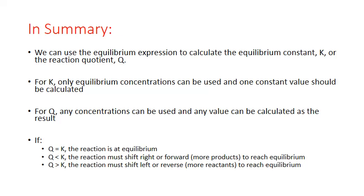In summary, we can use the equilibrium expression to calculate the equilibrium constant K or a reaction quotient Q. For K, only equilibrium concentrations can be used, and one constant value should result. For Q, we can substitute in any concentrations and any value can be returned. If Q equals K, the reaction is at equilibrium. If Q is less than K, the reaction shifts right or forward to produce more products. If Q is greater than K, the reaction shifts left or in reverse to produce more reactants to reach equilibrium.